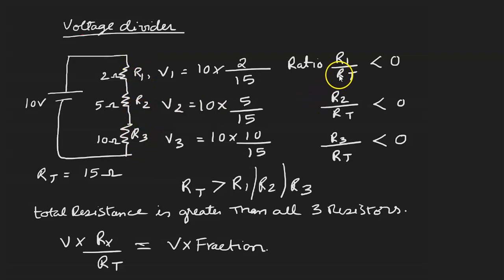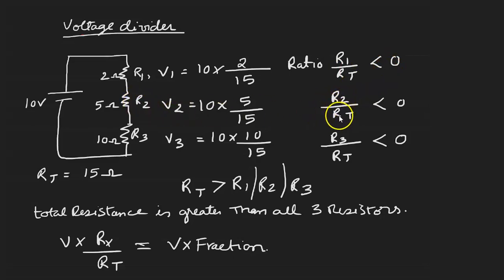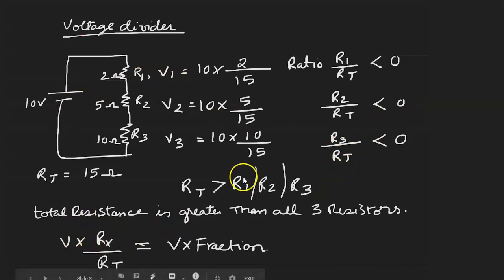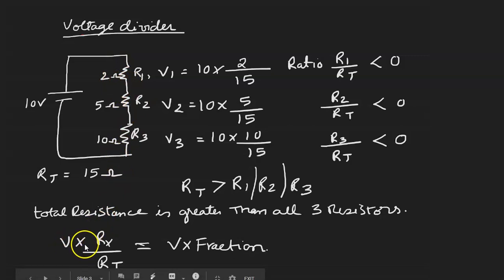If you put the total resistance RT in the numerator and R1 in the denominator you would get a voltage multiplier, which is not possible. Again for R2, the ratio R2 by total resistance is always less than 1, and similarly for R3. In simple mathematical terms, what the voltage divider does is multiply the voltage by the ratio of the resistance — voltage times some fraction gives the voltage drop across each resistor.